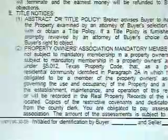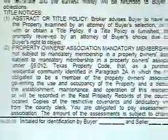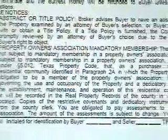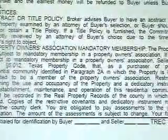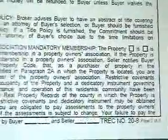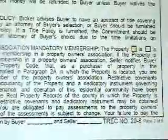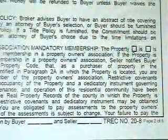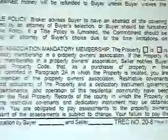Paragraph 6, section E, number 2. This paragraph covers whether the property is under homeowners association mandatory membership. If it is, you check that the property is under mandatory membership. If it's not, you just check the second box.